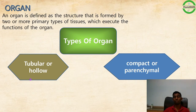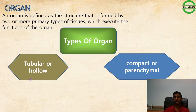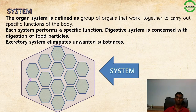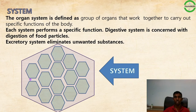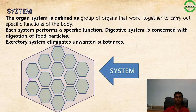There are two types of organs: tubular or hollow organs, and compact or parenchymal organs. Next, a group of organs working together for a specific function is called a system.